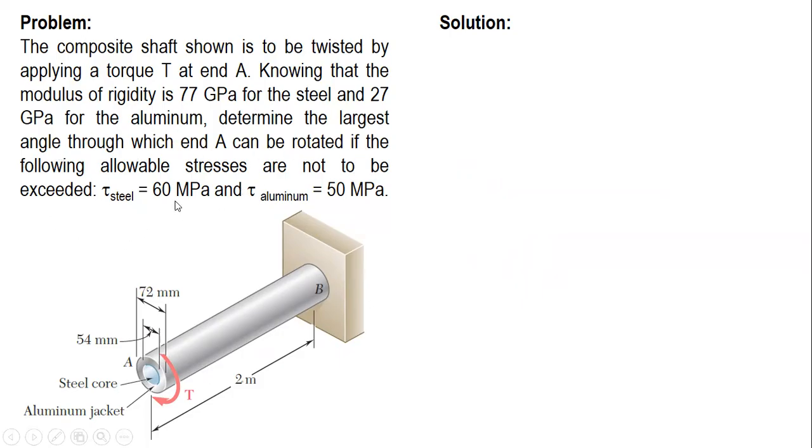What we are going to do is, using 60 MPa, we can solve for the resisting torque of steel. Using the formula, since steel is a solid shaft, the formula is τ = 16T/(πD³). From there, we can solve for the resisting torque.